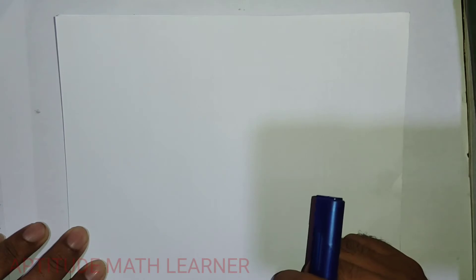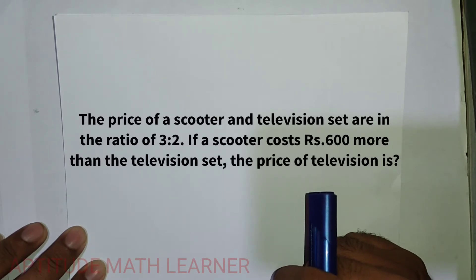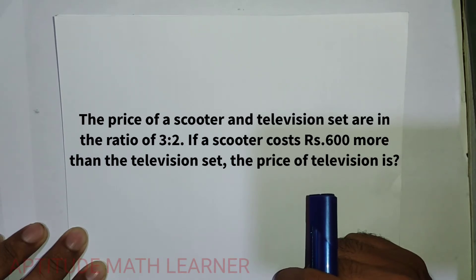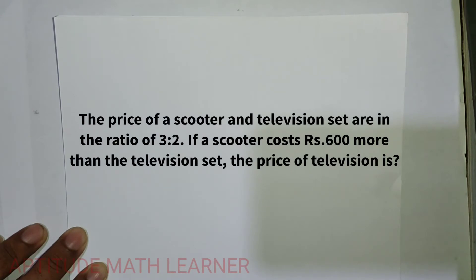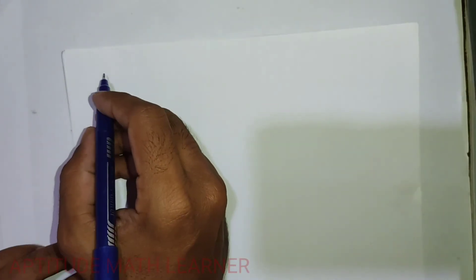Welcome, today we are having a new question. The price of a scooter and television set are in the ratio of 3:2. If a scooter costs rupees 600 more than the television set, the price of the television set is what? Let's try to solve the question in the easiest way.